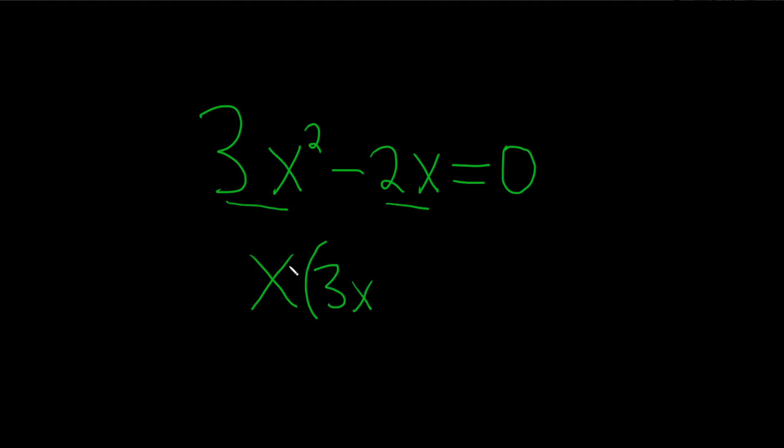And then what do you multiply by x in order to get negative 2x? Just negative 2. So we have this equal to 0.